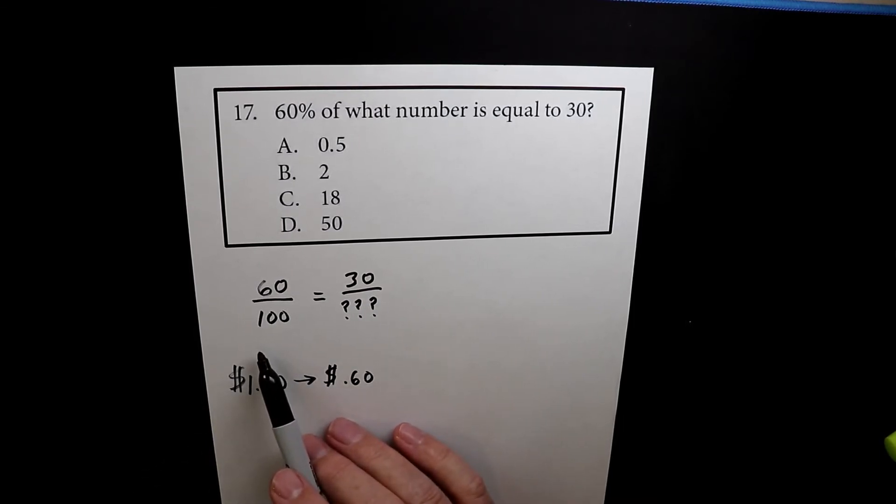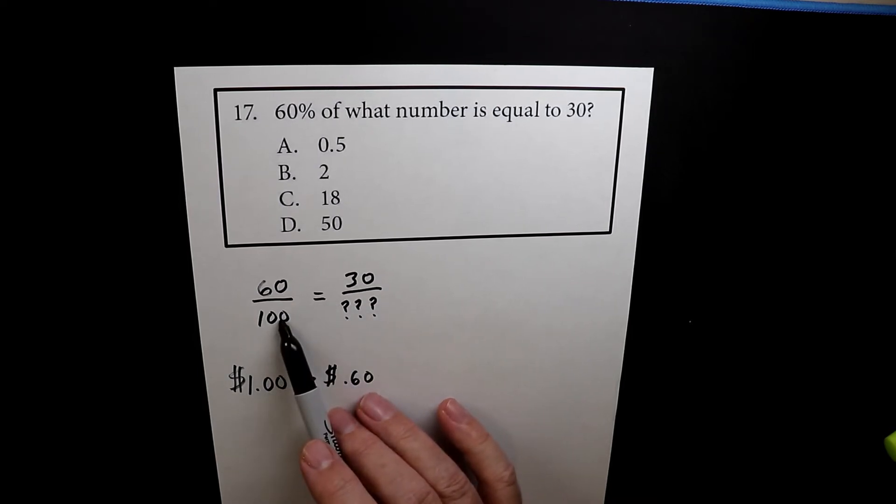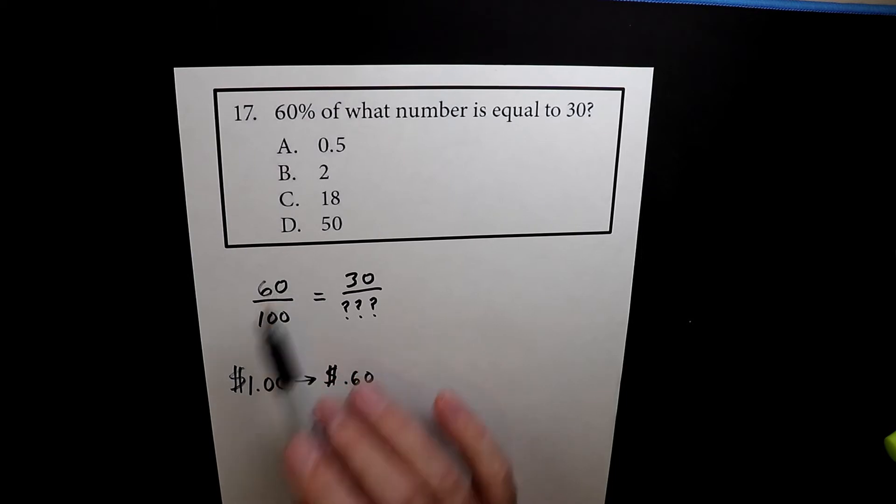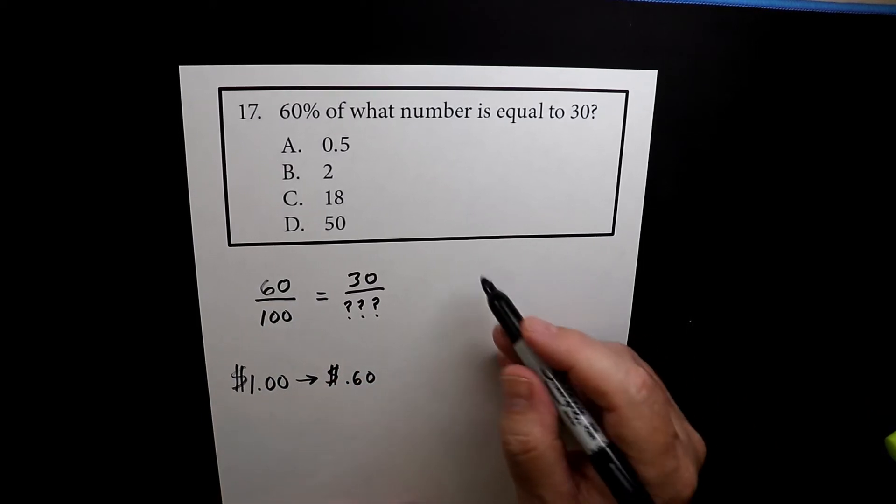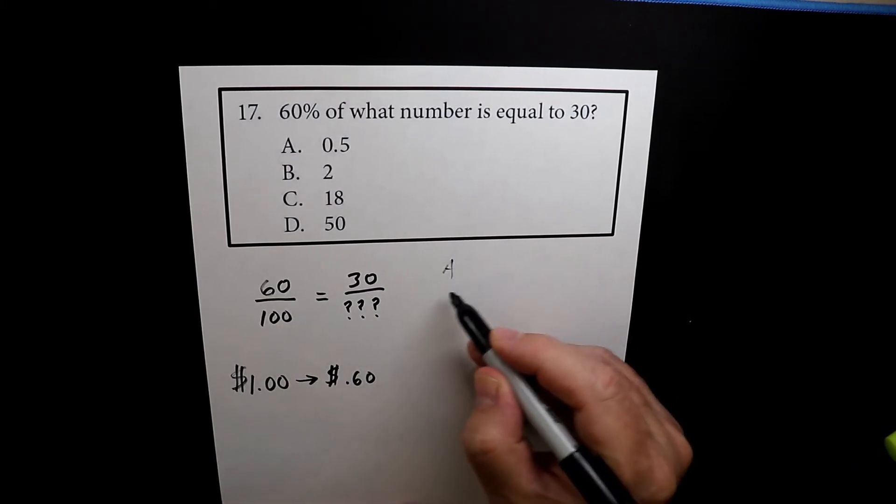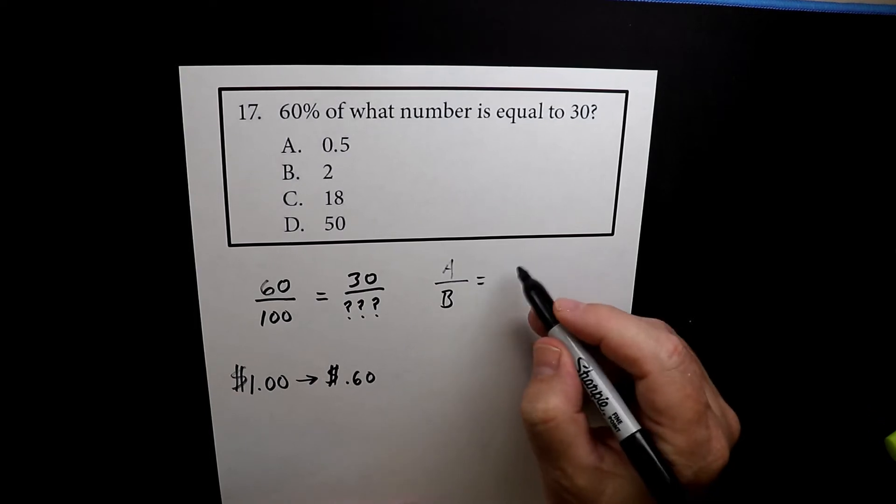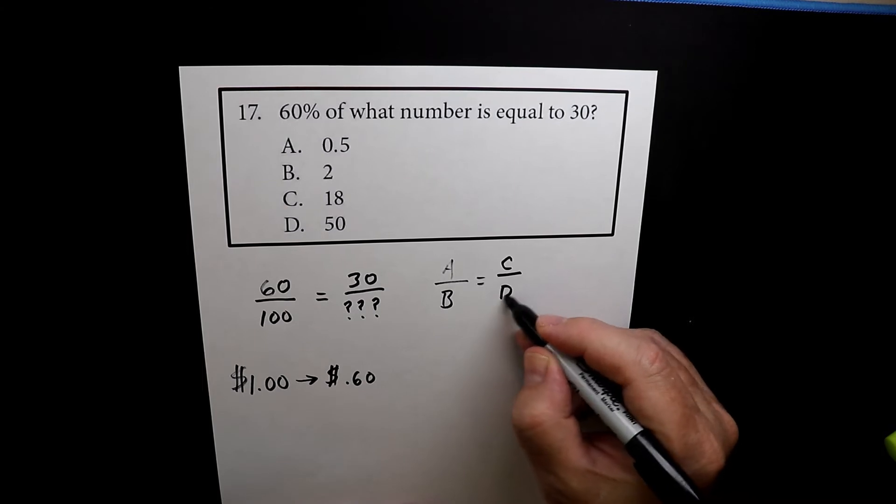And the way you do that is you go with the two corners that you see and you multiply, and then you divide by the last number. So let me say that again. So we have this number which we'll call A, this one we'll call B, this one we'll call C, and this one we'll call D.